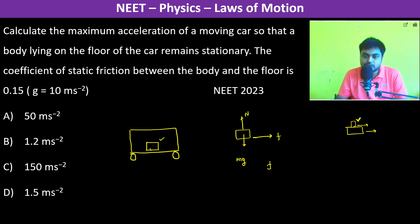Now this friction's maximum value is going to be mu into n, which is mu into m into g, which is equal to 0.15 into m into g, which is 10. So therefore 1.5m is the maximum friction.